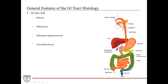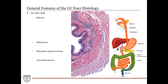While it's convenient to know there is a reliable four-layered organization of the GI tract wall throughout this long tube, it is also important to remember there are some structural and histological compositional variations depending on the different functions and locations of these GI tract portions. We'll spend a significant amount of time looking at these specific features of various regions in later sections, but for now we'll look at the general features of the GI tract histology in a little more detail, starting with the mucosa.